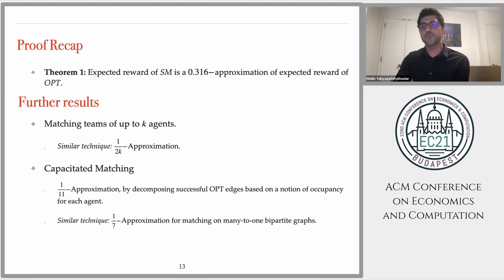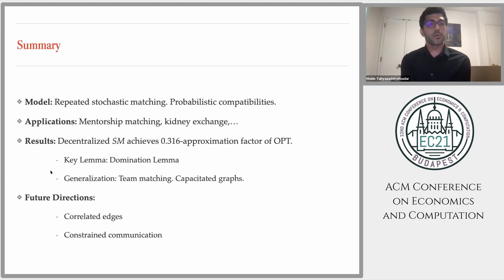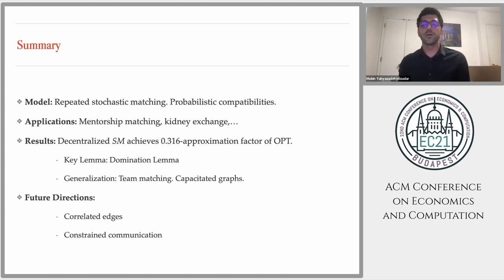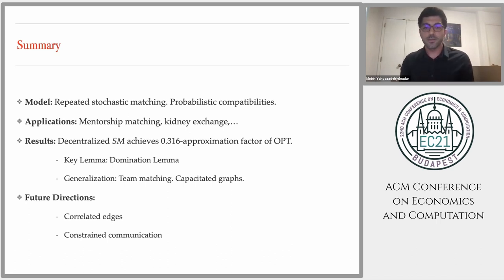If we do this analysis more carefully, we can achieve a 1 over 7 approximation in many-to-one bipartite graphs. To summarize, we considered a model for repeated stochastic matching where compatibility is probabilistic, is realized the first time agents are matched, and persists in the future. Such a model has applications in the gig economy, mentorship matching, and kidney exchange. We showed a decentralized matching process that can approximate the optimum online algorithm, and the main technical lemma — the domination lemma — was also used to generalize results for team matching and capacitated graphs. For future directions, I'm very excited to investigate algorithms when edges are correlated, or when there are communication constraints between agents.